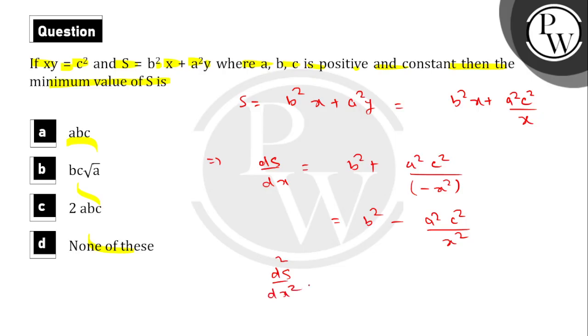If we differentiate, that is d square s upon dx square is equal to, b square is equal to zero.